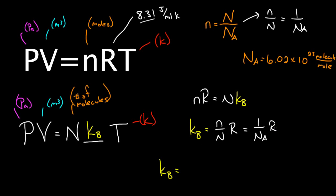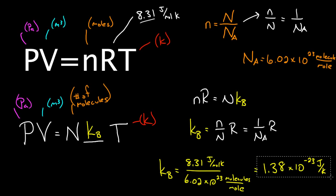And if you multiply that out, the gas constant, which is 8.31 joules per mole kelvin, and divide by Avogadro's number, which is 6.02 times 10 to the 23rd molecules per mole, you'll get Boltzmann's constant, which equals 1.38 times 10 to the negative 23rd joules per kelvin. This is Boltzmann's constant. This number right here is Boltzmann's constant.